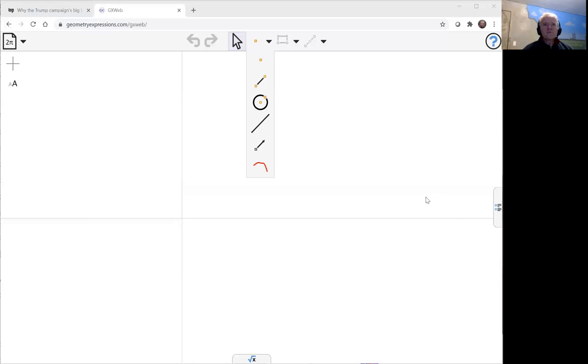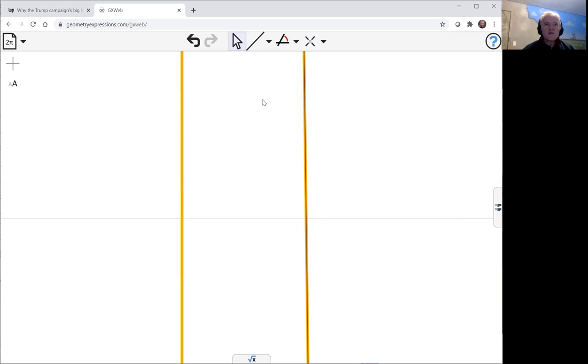Let me go to GXWeb here. As with many of these mechanisms, we're having a subsidiary vertical line parallel to the y-axis, and you can specify its distance and its parallelism at the same time with the distance constraint.